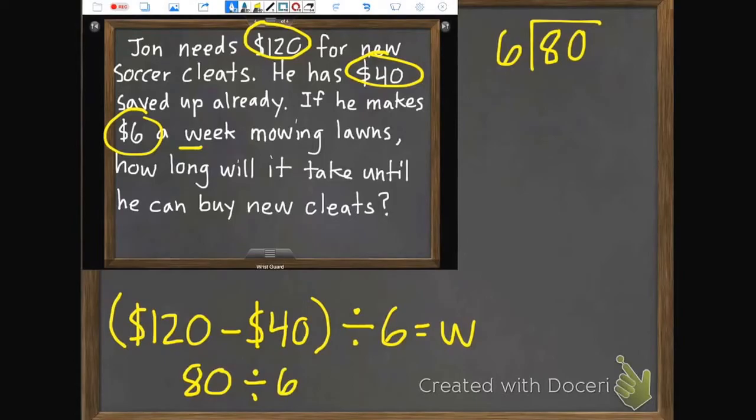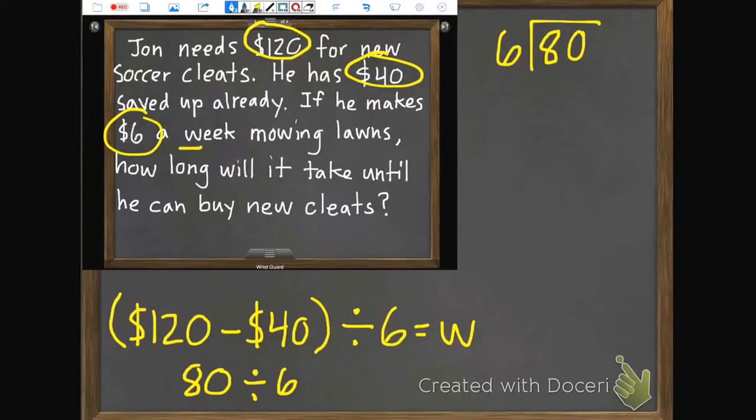$120. So that went kind of fast. So $120 subtract $40 was $80. And then we need to divide that by our $6, the $6 a week that he'll make. So I wrote that over on the side. $80 divided by $6. So 8 divided by $6 is $1. 1 times $6 is $6. 8 subtract $6 is $2. Bring down our $0. And we start over. So $20 divided by $6. So $20 divided by $6 is $3. 3 times $6 is $18. 20 subtract $18 is $2. So we have $13 remainder $2.